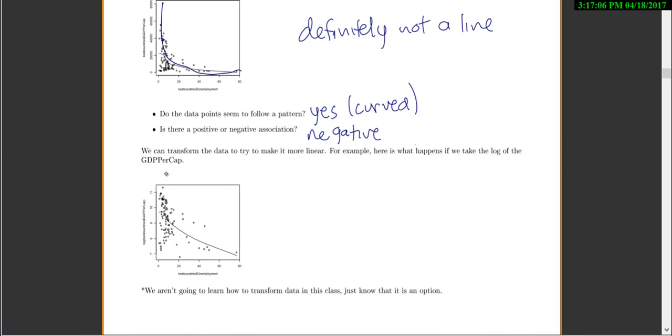Now one of the things that you can do is you can try and transform data to make it a little more linear. So if you were to take the log of all of your GDP values, then this looks a little bit more like a line. So this one now looks a little more linear. But still not that linear. So it's a little bit better. Now we're not actually going to learn how to transform data in this class. I just want you to know that it's an option.